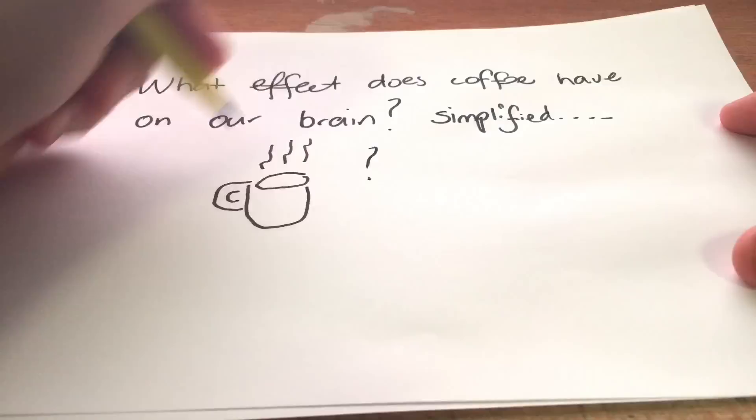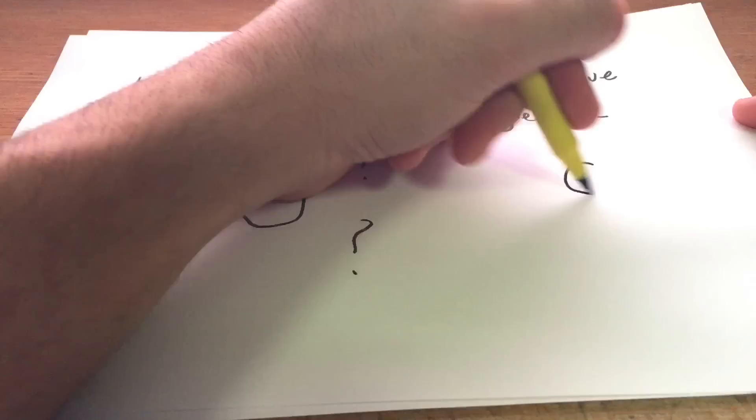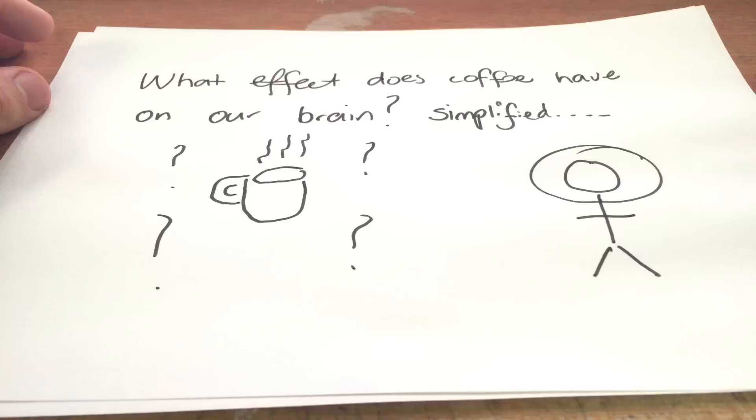So basically this video is a brief overview on what coffee is doing to our brains. My little stick man here, we're going to circle his head and we're going to zoom into there right now.